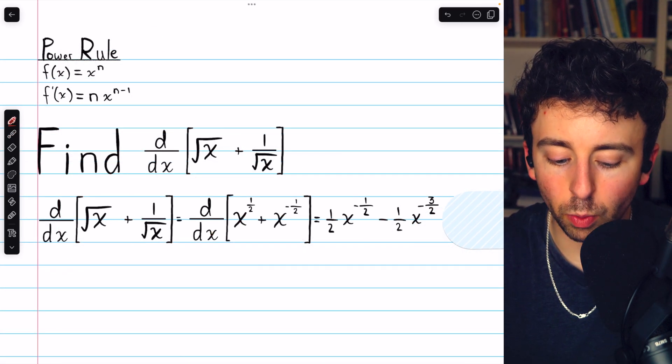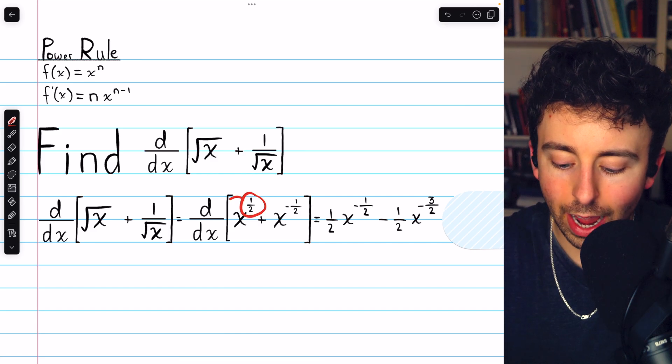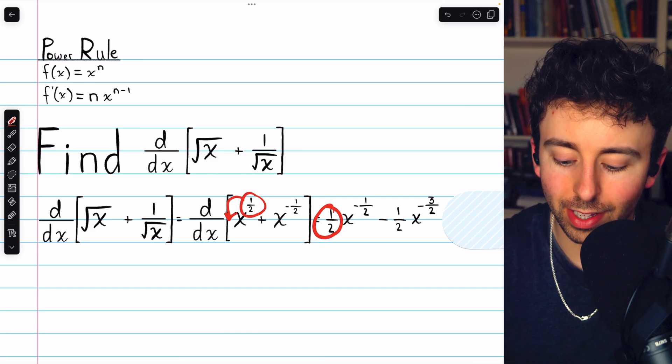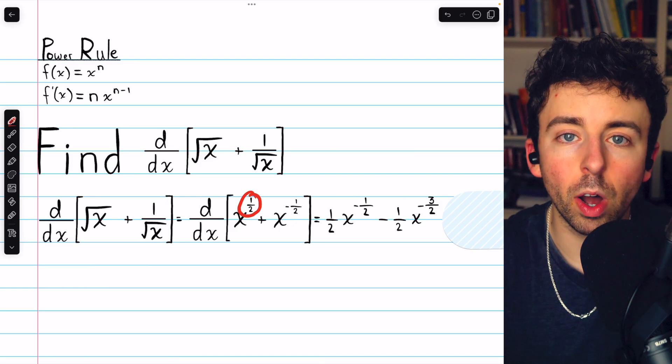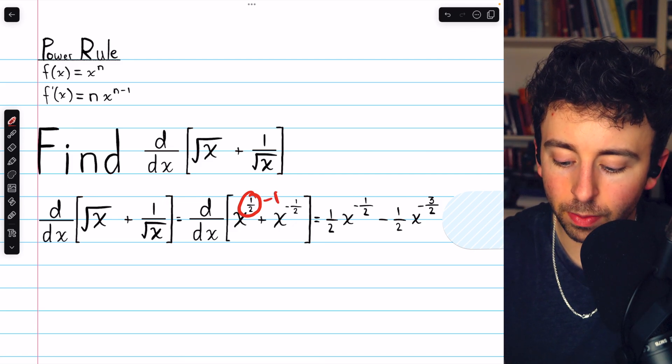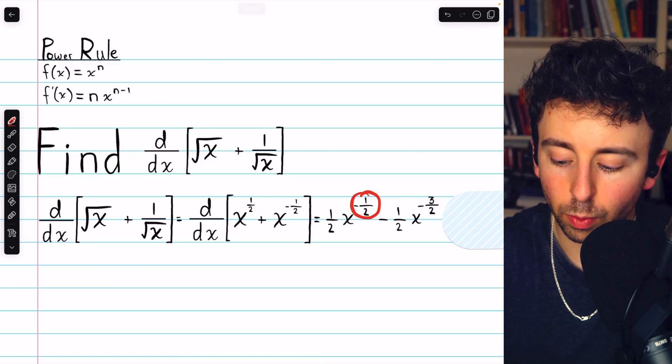First, the derivative of x to the 1 half. We have to take the 1 half down front as a factor. We see that there. And then reduce the power by 1. 1 half minus 1 is negative 1 half, which we see there.